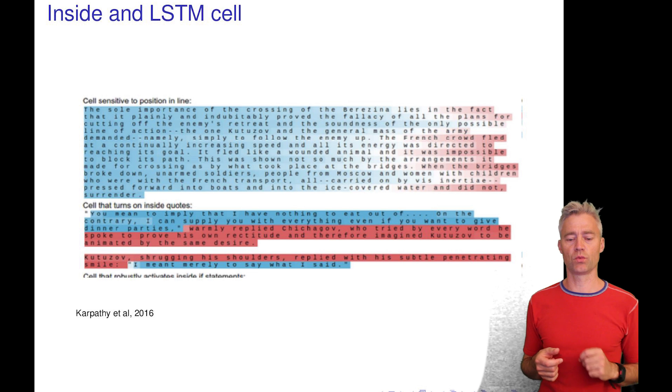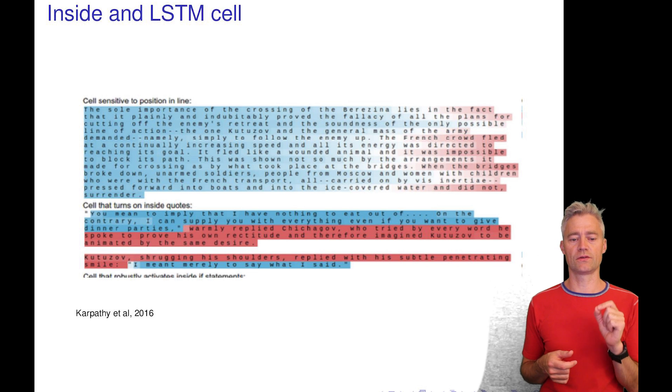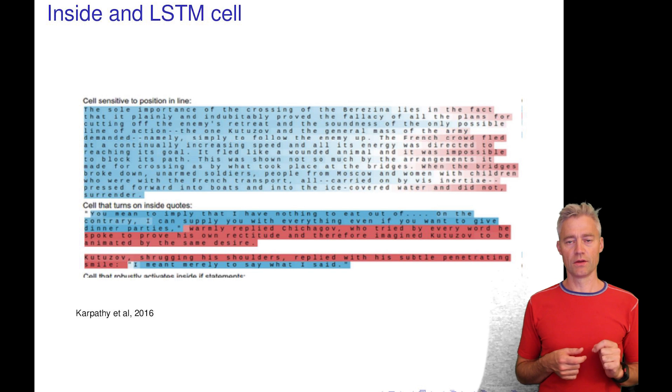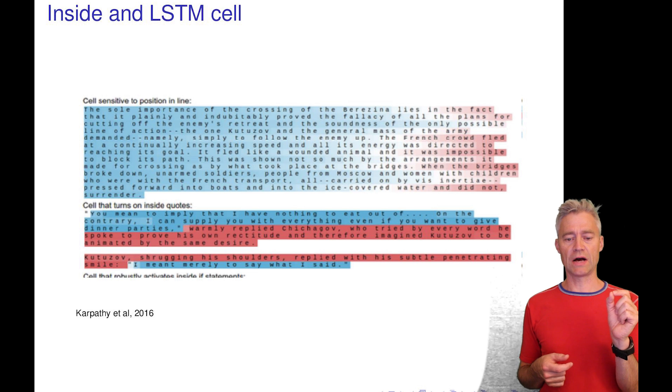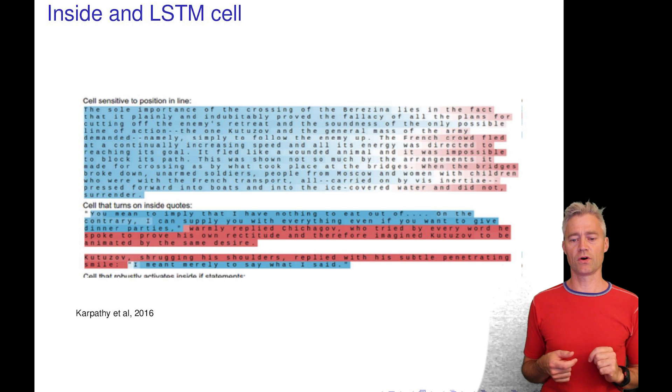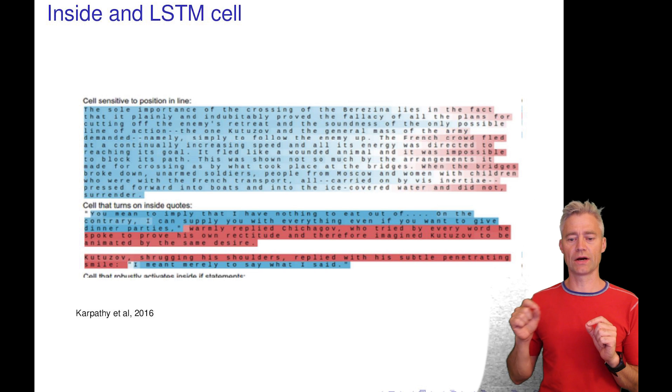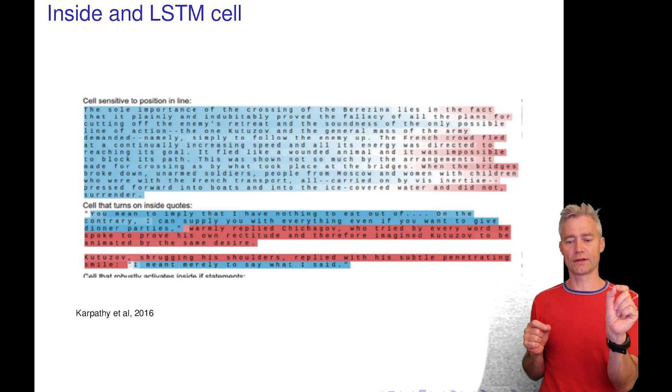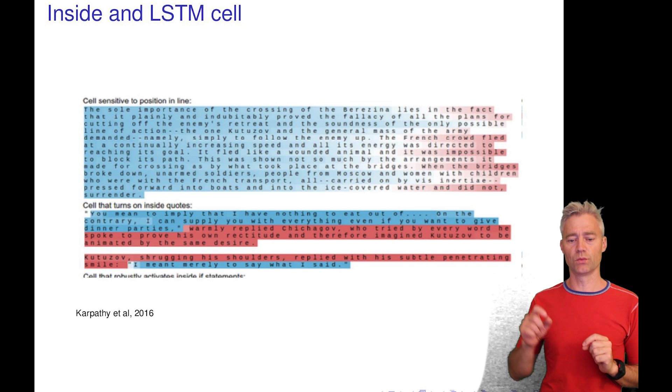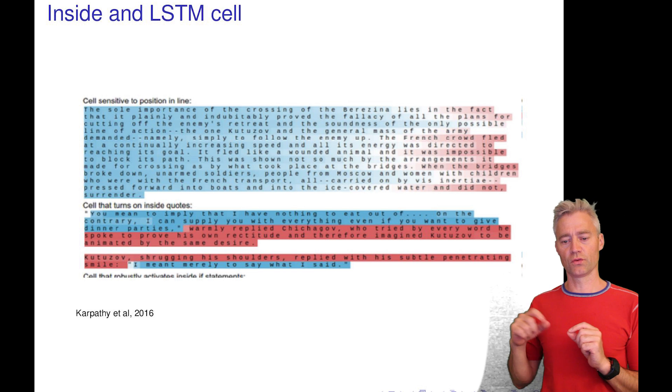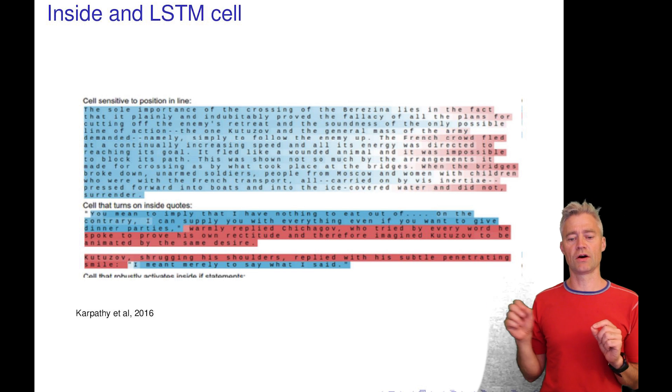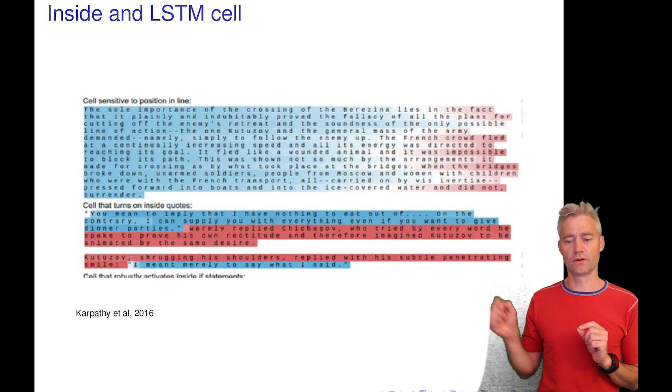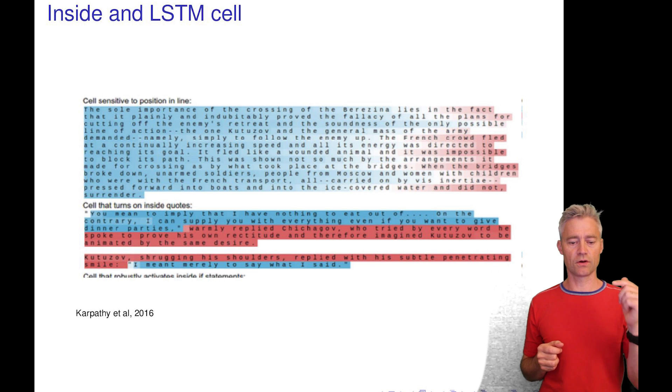You can see here we color code the value inside the cell. This cherry-picked cell is actually keeping memory of how far in the sentence we have come, because we also asked the network to predict character returns. You can see that when we get close to where it has to make a line break, the cell is kind of turned off so that it actually remembers how far it has written since the last character return.